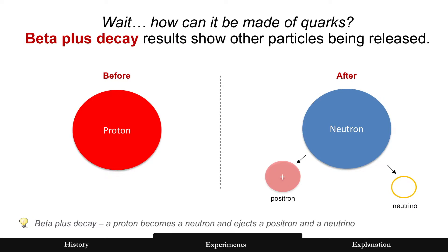So in beta plus decay, you see the before on the left and the after on the right. So what starts off as a proton can become a neutron. A proton can become a neutron, but along the way it ejects a positron and a neutrino. Where did those come from if the proton is made of quarks?